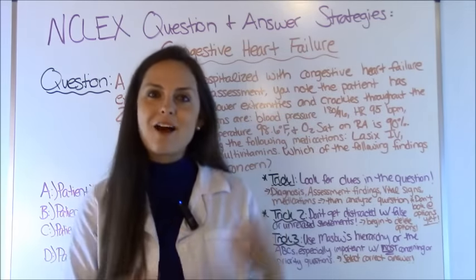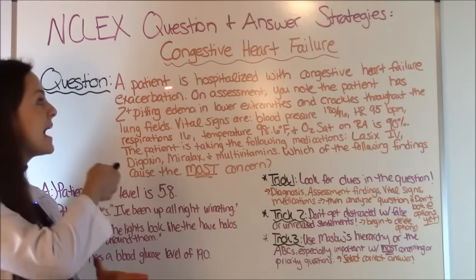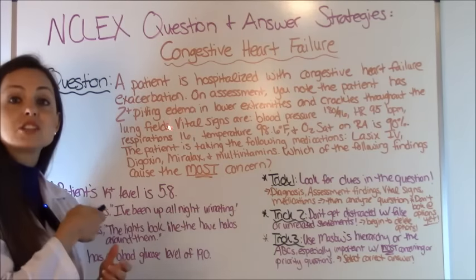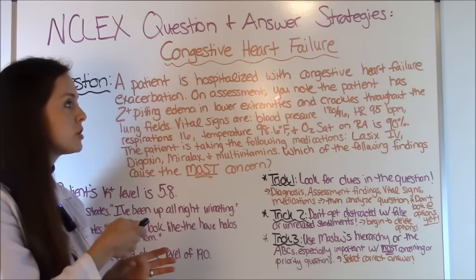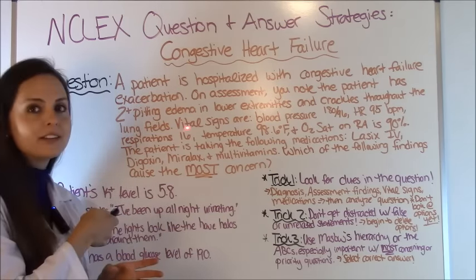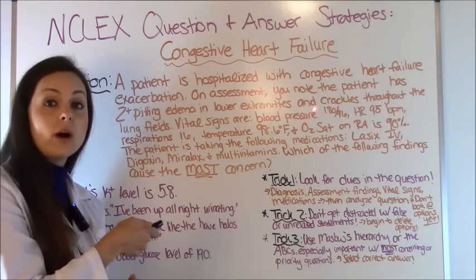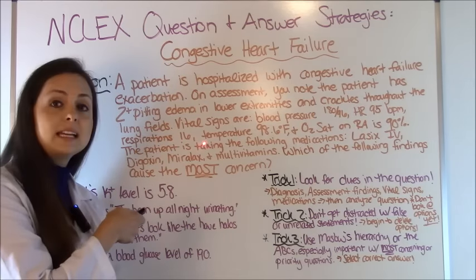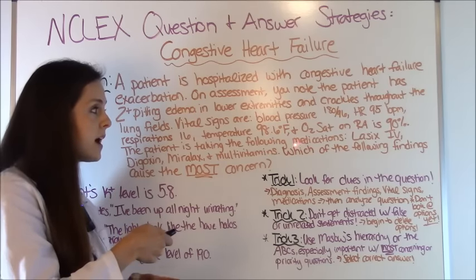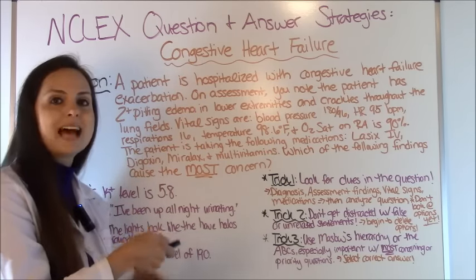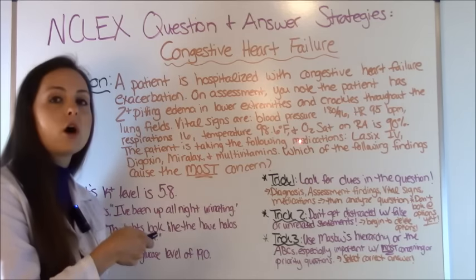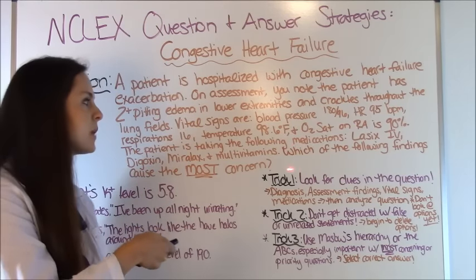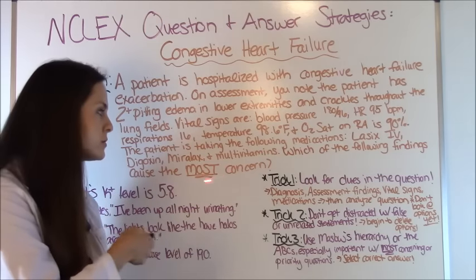Let's get started by reading our question. A patient is hospitalized with congestive heart failure exacerbation. On assessment, you note the patient has 2+ pitting edema in the lower extremities and crackles throughout the lung fields. Vital signs are: blood pressure 180/96, heart rate 95 beats per minute, respirations 16, temperature 98.6°F, and O2 saturation on room air is 90%. The patient is taking the following medications: Lasix IV, Digoxin, Miralax, and multivitamins. Which of the following findings is the most concerning?